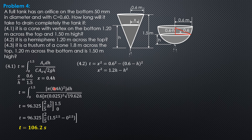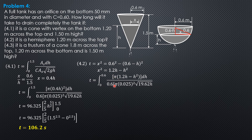Substituting into the formula: time equals the integral from 0 to 0.6 of π·X², where X² = 1.2H − H², dH over C = 0.6, orifice area π(0.025)², times √(19.62). Pi cancels. Computing the constant: 1 / (0.6 × (0.025)² × √(19.62)) = 602.032. The first term integral: 1.2 × ∫H/√H dH = 1.2 × ∫H^(1/2) dH. The integral of H^(1/2) is H^(3/2) over (3/2), and reciprocal of 3/2 is 2/3. So we get 1.2 × (2/3) × H^(3/2).